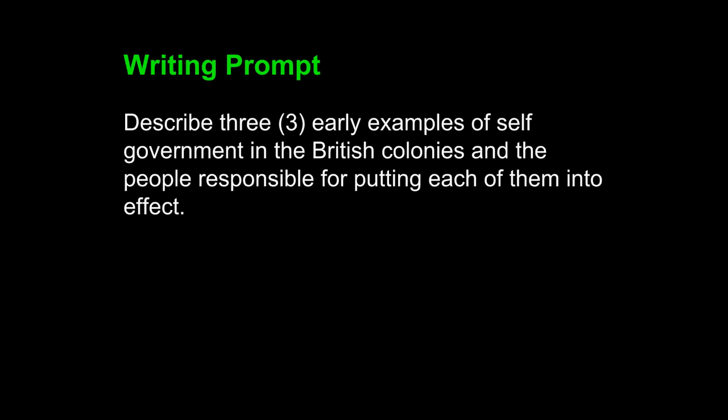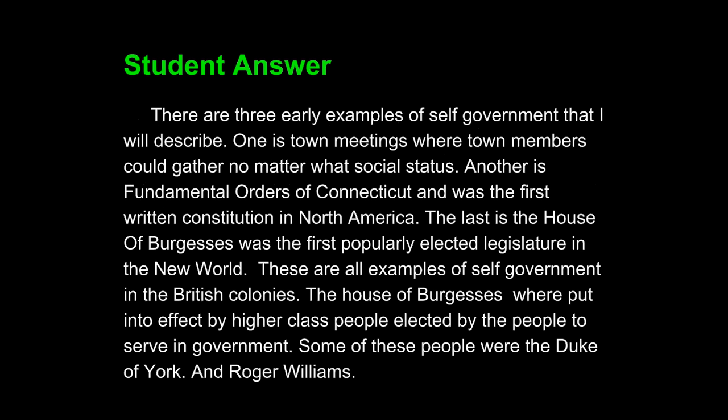You must always begin with the prompt to understand how you write. Let's take a look at a standard student answer to this prompt: "There are three early examples of self-government that I will describe. One is town meetings, where town members could gather no matter what social status. Another is Fundamental Orders of Connecticut and was the first written constitution in North America. The last is the House of Burgesses, the first popularly elected legislature in the New World. These are all examples of self-government in the British colonies. The House of Burgesses were put into effect by higher class people elected by the people to serve in government. Some of these people were the Duke of York and Roger Williams."